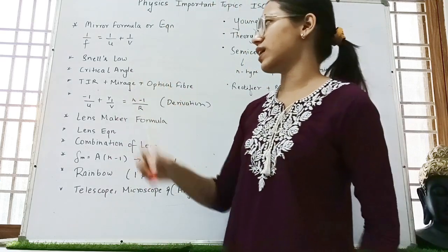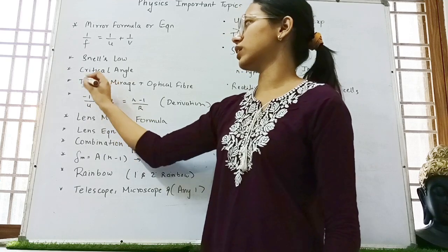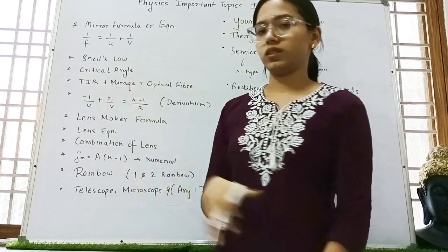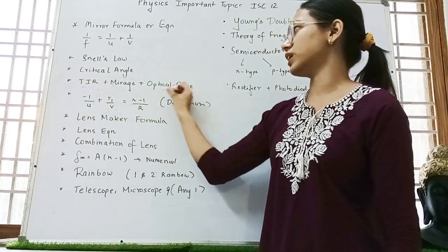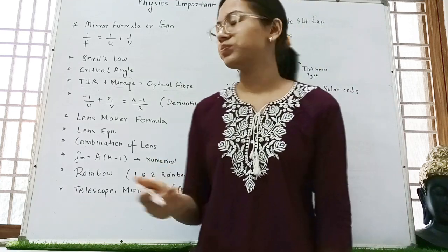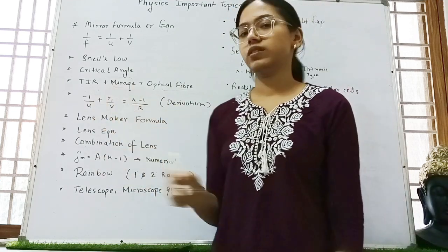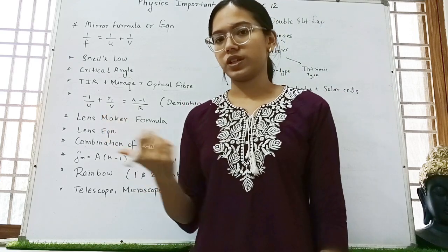Then Snell's Law, critical angle, you know IC. Then the TIR and its total internal reflection, mirage. The diagram is there. Then optical fiber. What is its use? Then the derivation and the formula based question are also asked.